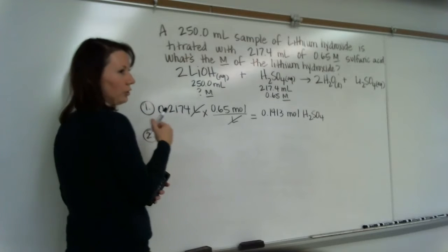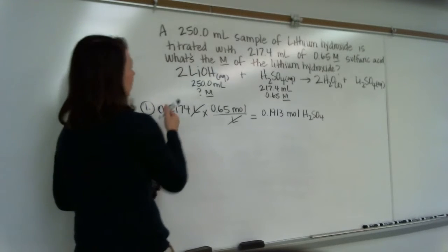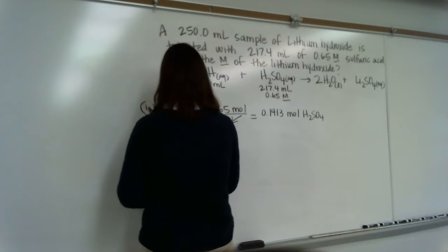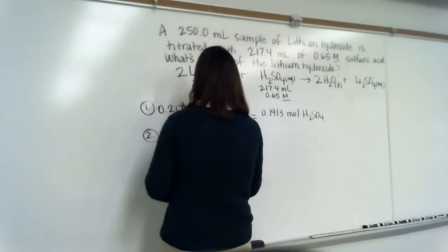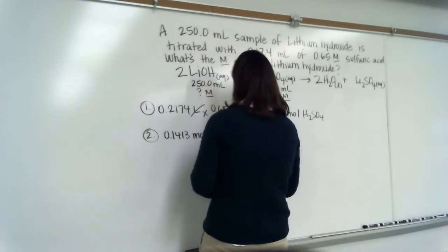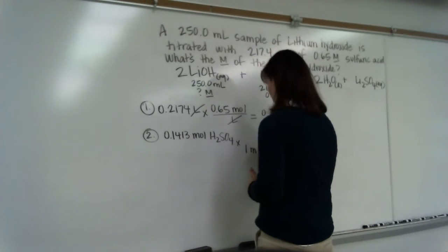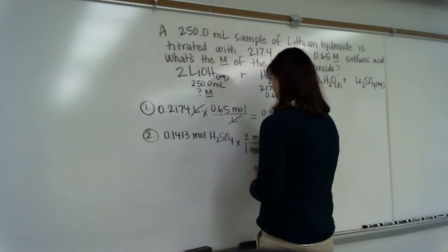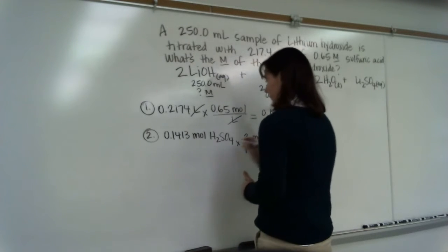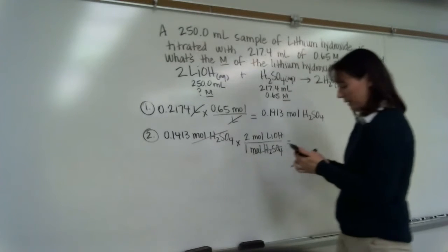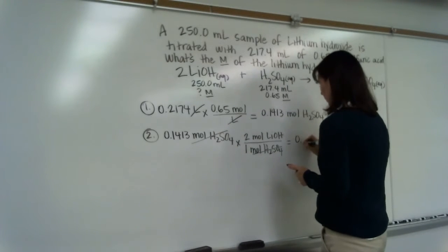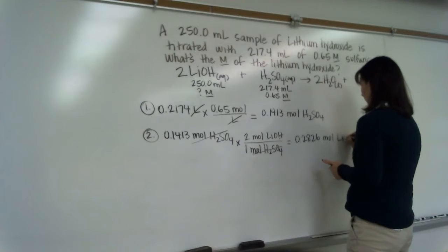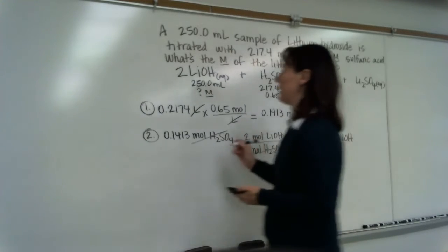Now multiply by the mole ratio. Is this mole ratio one to one? No, it's not. So if we hadn't balanced this we would definitely have a problem with our calculation here. So 0.1413 moles H2SO4 for every one mole of sulfuric acid I use I require two moles of LiOH. So multiply by two I get 0.2826 moles LiOH.